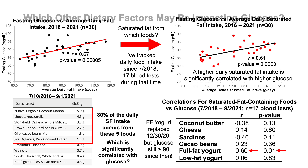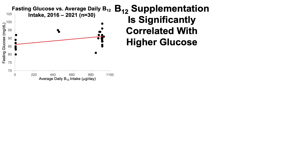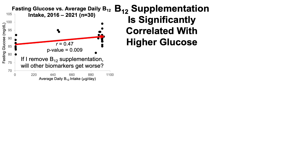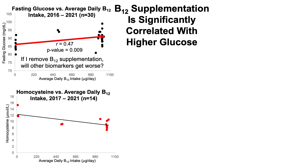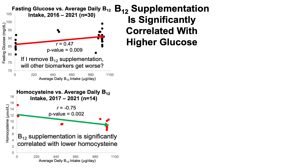Which other dietary factors may be impacting glucose? One factor may be vitamin B12. I've been supplementing with B12, and the plot for my dietary B12 intake versus fasting glucose shows a significantly positive correlation — the higher my B12 levels, the higher the fasting glucose. The reason I've been taking methyl B12 is to limit homocysteine, which has been trending higher during aging, and relatively higher homocysteine is associated with increased all-cause mortality risk. We can see a significant correlation where higher B12 is associated with lower homocysteine. So if I remove B12, it may reduce glucose, but it may make homocysteine worse.